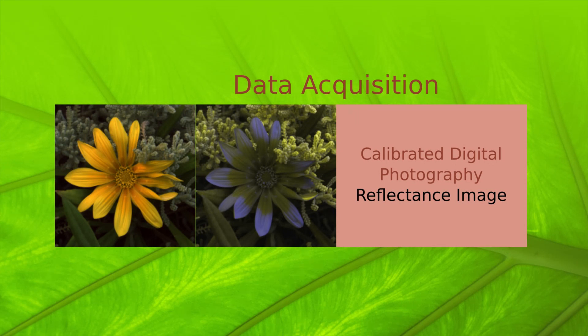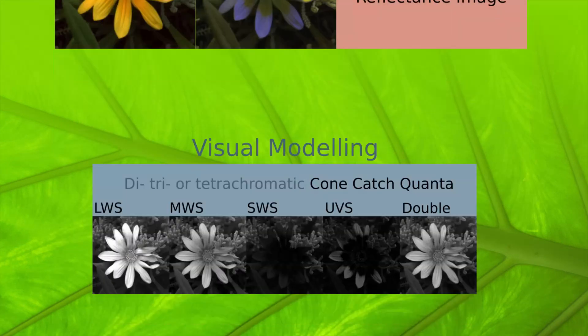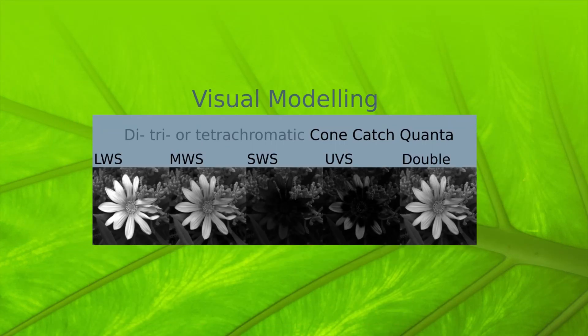Next, these calibrated images need to be converted into cone-catch quanta. This step of visual modelling allows you to take the calibrated image and convert it to the colour vision of your receiver.